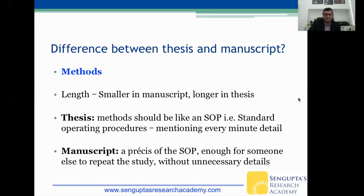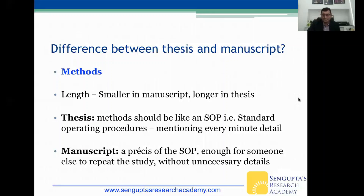Regarding methods, the length is again smaller in manuscripts and longer in theses. The thesis methods should be like an SOP — standard operating procedures — mentioning every minute detail, such as which nurse takes the patient from OCT to the physician, or which optometrist is blinded to the procedure. The manuscript methods must be a précis of the SOP: enough for someone else to repeat the study without unnecessary details.